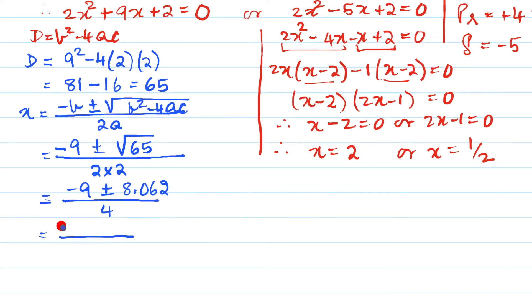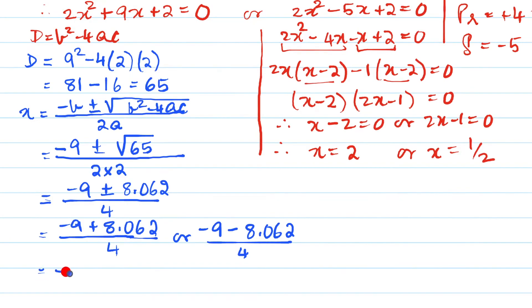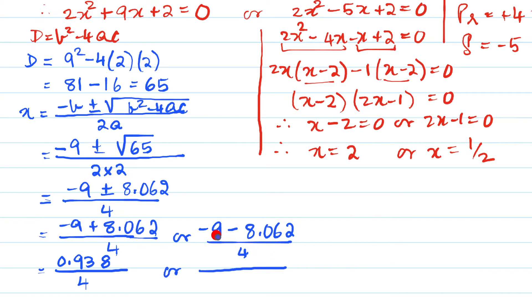So you will now have two values -9 + 8.062 / 4 or it will be -9 - 8.062 / 4. And that will give us here -9 and this will be +8.062 and that will give us 0.938 / 4 or here 9 and 8 is 17 so -17.062 / 4.